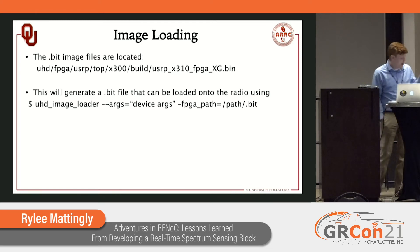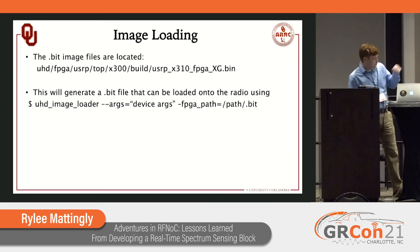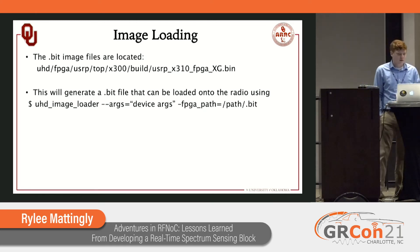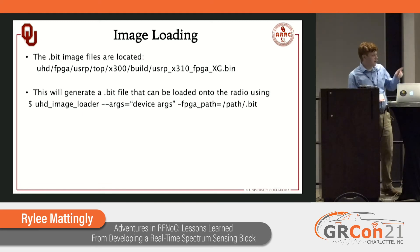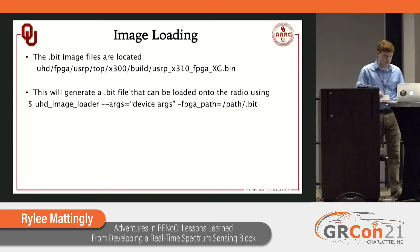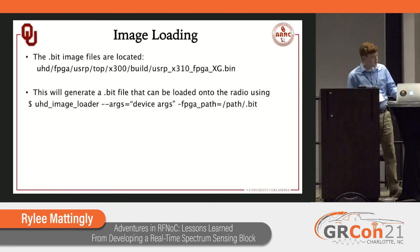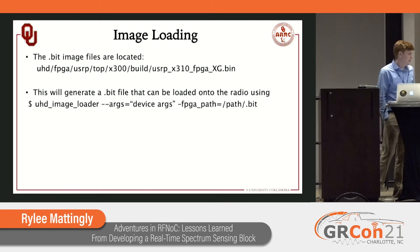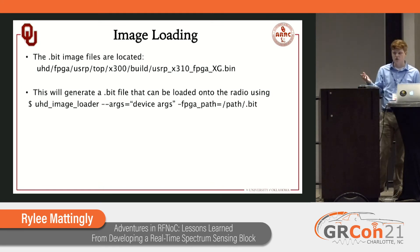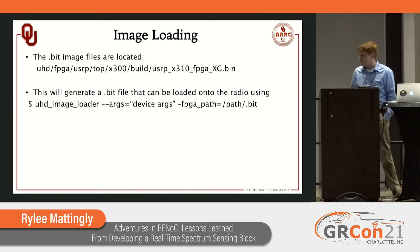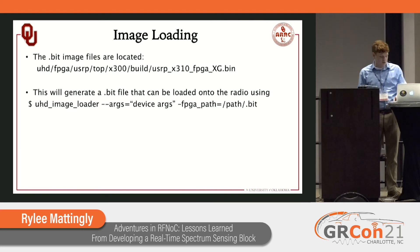That creates a .bit file located in a specific directory. Your XG or HG suffix will vary based on what type of image you created — I have an XG image here because we're using dual 10 gigabit Ethernet. Then we can use the uhd_image_loader command, giving it the device arguments you would normally use to connect to your radio and the path to the .bit file, and it will load that onto the radio.